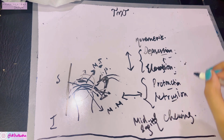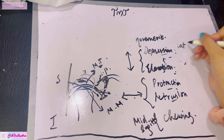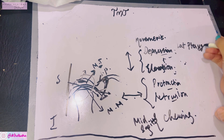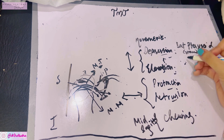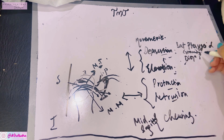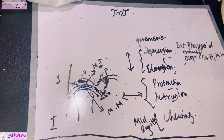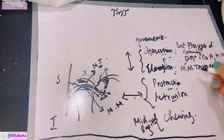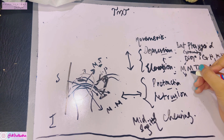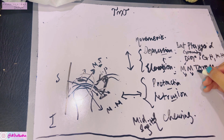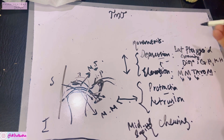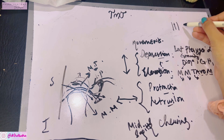Depression of the mandible is mainly caused by the lateral pterygoid, assisted by gravity and the digastric, geniohyoid, and mylohyoid muscles. For elevation, use the mnemonic MM-TAV: Masseter, Medial pterygoid, and Temporalis. The anterior vertical and oblique middle fibers of the temporalis are responsible for elevation.